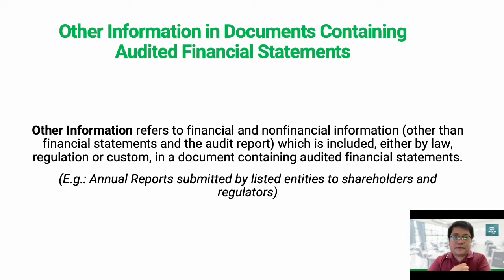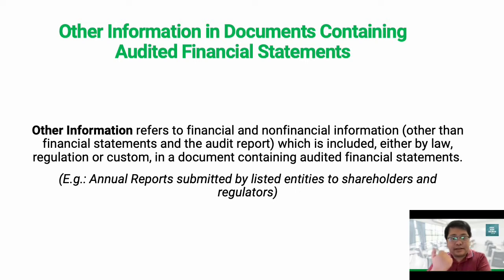Those reports — for example, the management discussion and analysis, as well as the president's report — would contain both financial and non-financial information, and some of that information can be cross-referred to the financial statements. For example, if management in their discussion said that sales increased by 100%, then it should tally with the actual increase in sales presented in the financial statements. Otherwise, there will be a material inconsistency if the information in the financial statements differs from the information in other information. Or, if there is incorrect information in other information, although not related to the financial statement, it will constitute a material misstatement of fact.